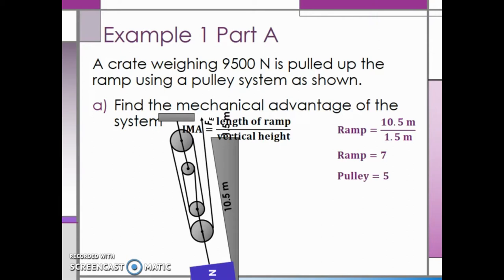Therefore, the mechanical advantage of the pulley system is 5. Now to find the total mechanical advantage, we multiply 7 by 5 to get a total mechanical advantage of 35.